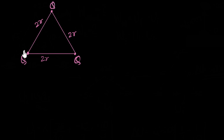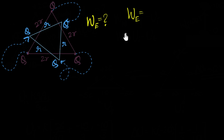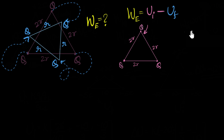Let's quickly try one more. We have three identical charges kept at the vertices of an equilateral triangle. An external agent — me — moves all three charges along given paths so that they form a new equilateral triangle with edge length r. If I move them very slowly without any acceleration, what is the total work done by the electric field? The work done by the electric field equals initial potential energy minus final potential energy.